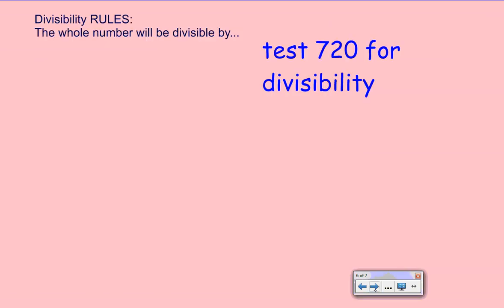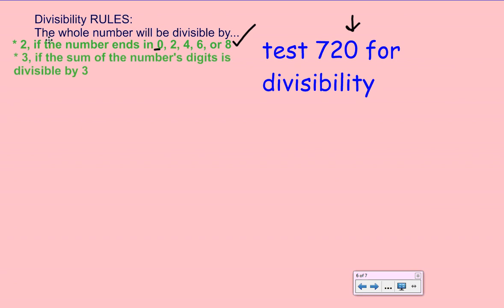Now let's try to apply some of these rules. We have the number 720 and we're going to test it for divisibility. First, is it divisible by 2? Does the number end in 0, 2, 4, 6, or 8? Looking at the last digit, it ends in a 0, so it must be divisible by 2 — put a check mark next to that rule. Is it divisible by 3? We find the sum of the digits: 7 plus 2 plus 0 equals 9. Is 9 divisible by 3? Yes, it is. So we put a check mark next to that one.